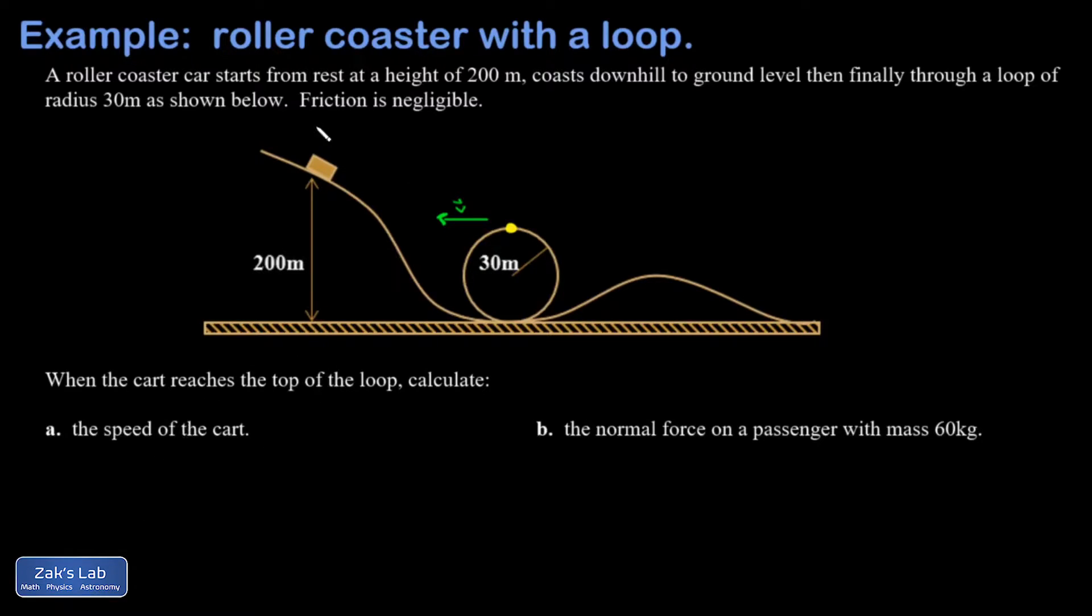I have an initial y value of 200 if I use the ground as my origin. So I have y initial equals 200 meters, and then my y value at the top of the loop, well, that's two radii above the ground. And so that's going to be 60 meters. So y final is going to be 60 meters.